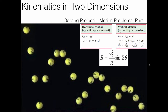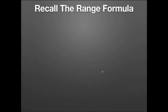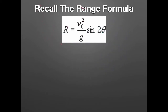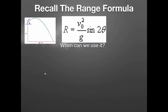This video is all about practicing problem-solving skills. I want to start by reminding you of the range formula — we learned that in our last video, but I want to review when it's used and when it's not used. For example, if we are at the top of a cliff and launch a cannonball at an angle with respect to the horizontal and it hits somewhere down below, you cannot use the range formula here because the initial and final vertical positions are different.